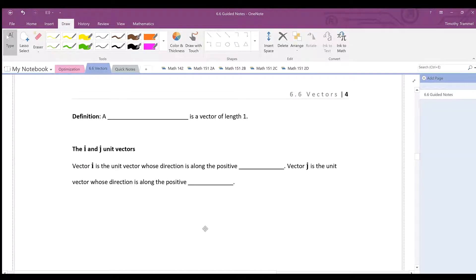A unit vector is a vector of length one. Just like our unit circle being radius one, a unit vector will just be a vector of length one.